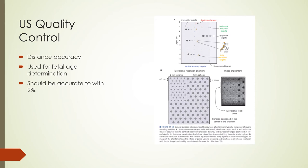Distance accuracy is important because it is used to calculate fetal age. It is measured with the first module by scanning the phantom and measuring the distance between rods of known separation on the image. Both vertical and horizontal distance accuracy are evaluated, with a goal of less than 2% error over a 10 cm measurement.